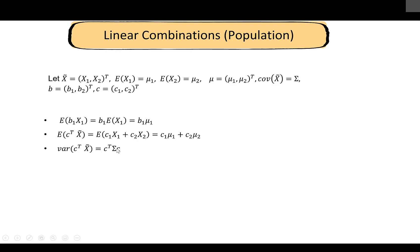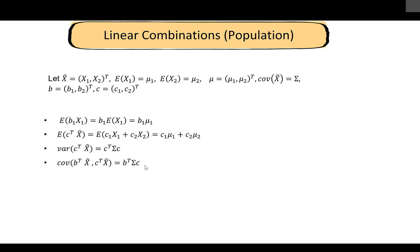An important result: the variance of the linear combination c-transpose x-tilde equals c-transpose sigma c. Also, the covariance between b-transpose x-tilde and c-transpose x-tilde — both of which are single scalar variables — equals b-transpose sigma c. Note that b-transpose is 1×2, sigma is 2×2, and c is 2×1, so the result is a 1×1 scalar. Always check that the dimensions match up.